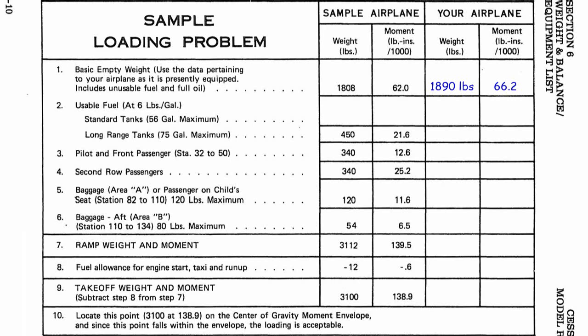Number one: the basic empty weight of the airplane. Our airplane weighs 1,890 pounds and its moment is 66.2 — those are the given numbers from the airplane's weight and balance document. Cessna's sample shows 1,808 pounds and a moment of 62.0, which is probably the factory average. Our airplane's weight has gone up because the owner added his own IFR instrumentation, a GPS, a DME, and other equipment — all of which added about 80 pounds. So we'll use our weight of 1,890 pounds and moment of 66.2.